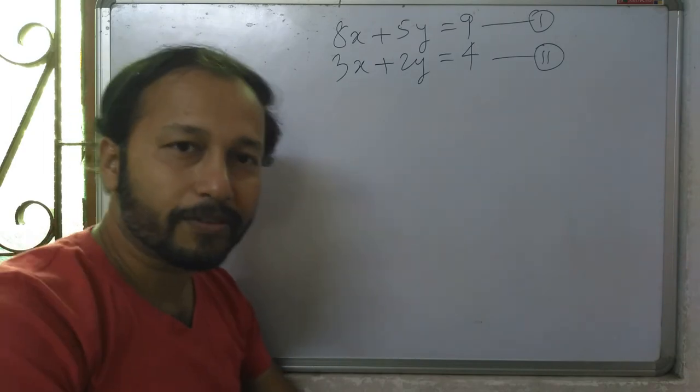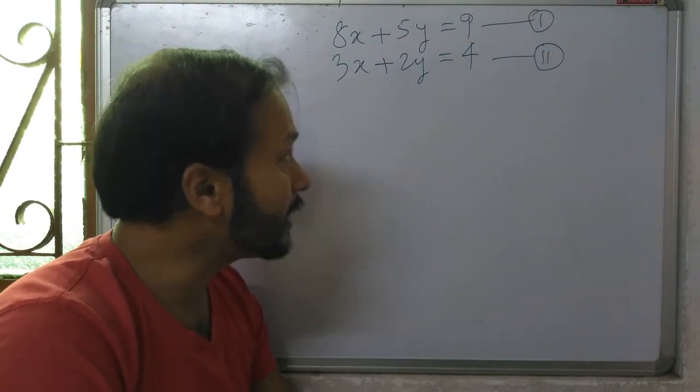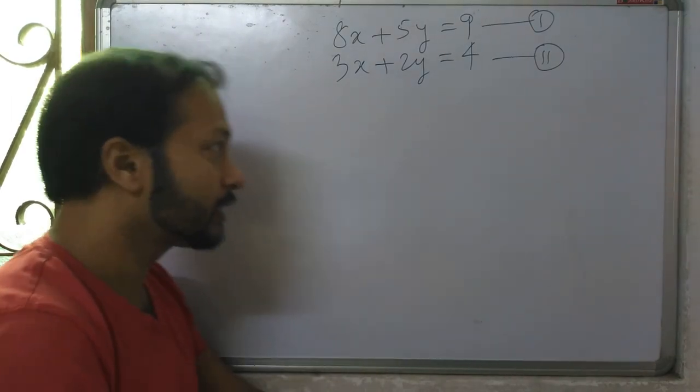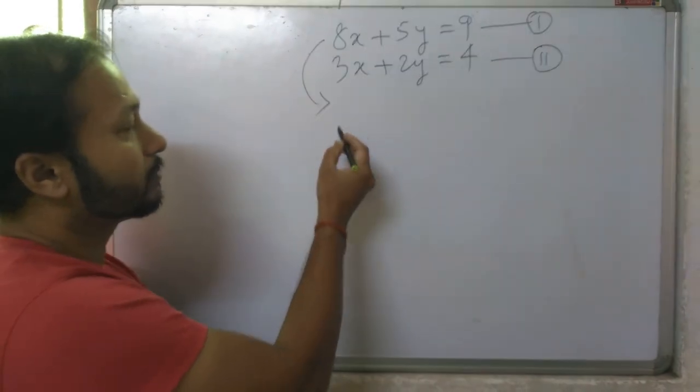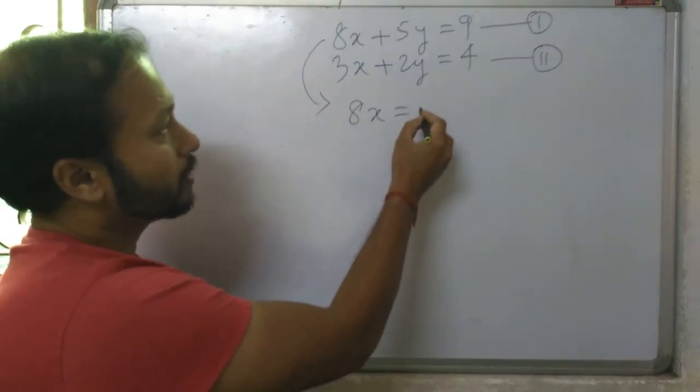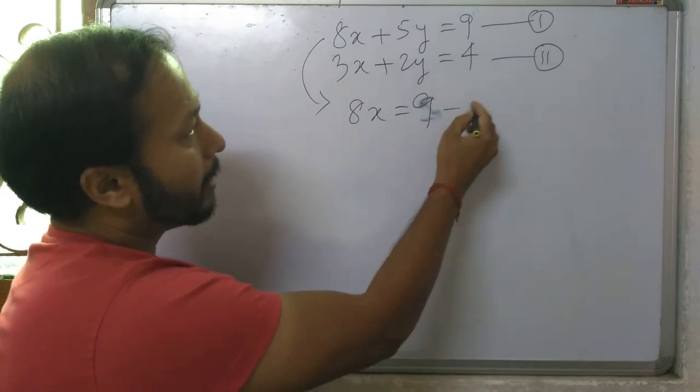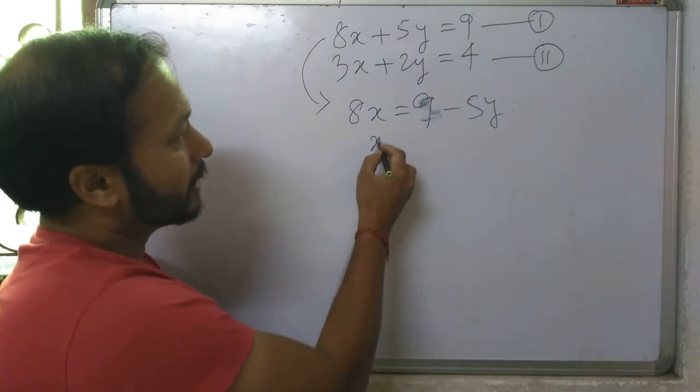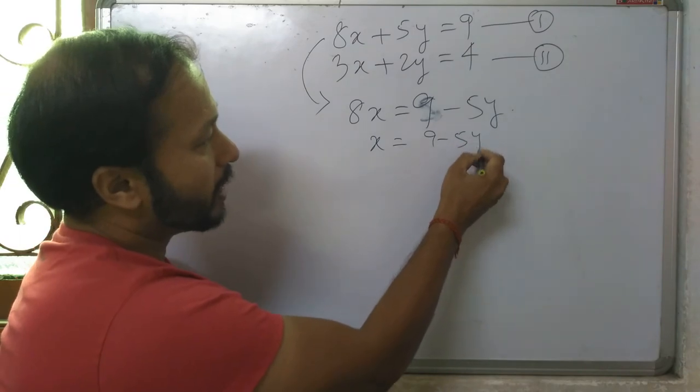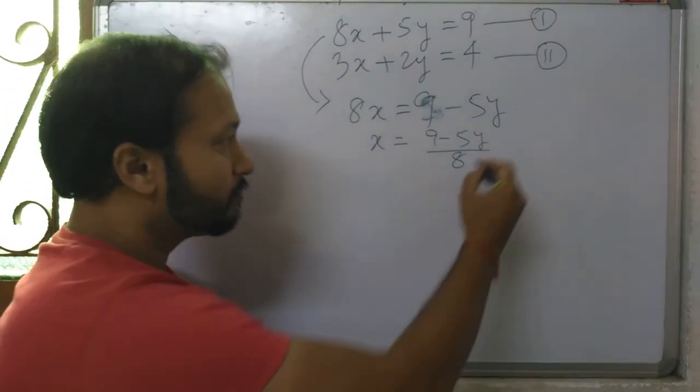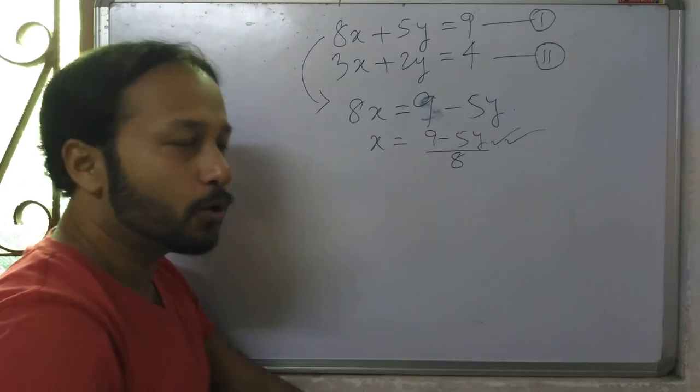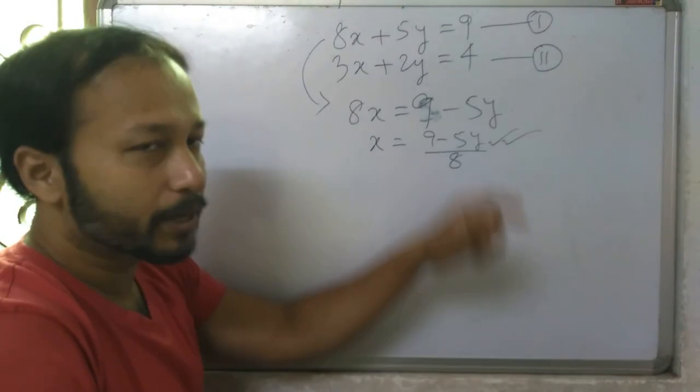From the first equation we will take out x. See, from here, 8x equals 9 minus 5y, so x equals 9 minus 5y by 8. Now this value of x we'll put in equation number 2.